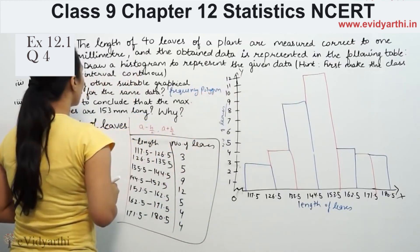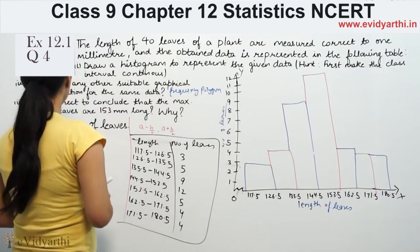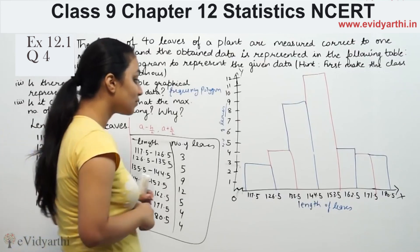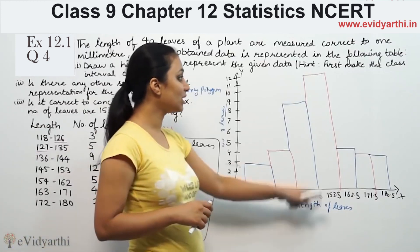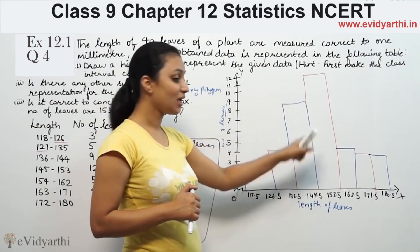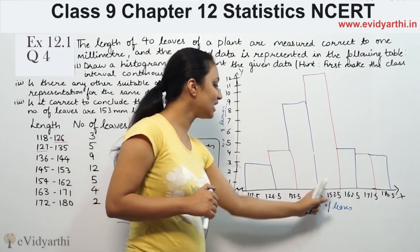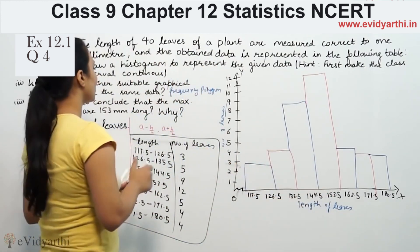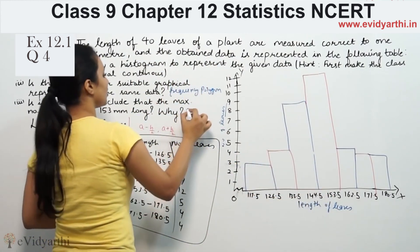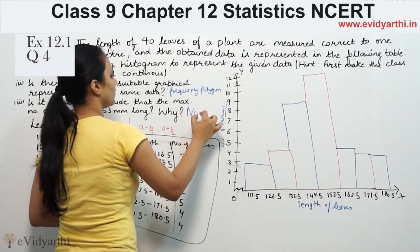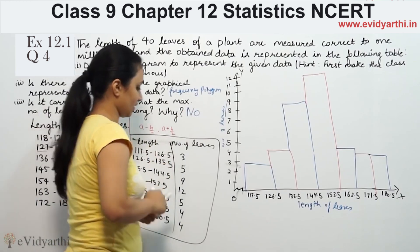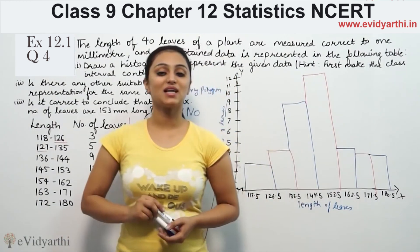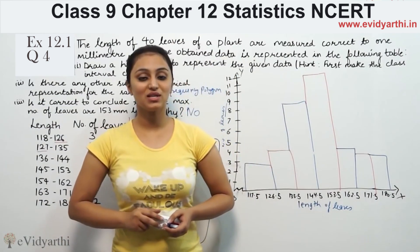The third question asks whether it is correct to conclude that the maximum number of leaves are 1 to 3 mm long. The answer is no. This was question number 4 from exercise 14.3.